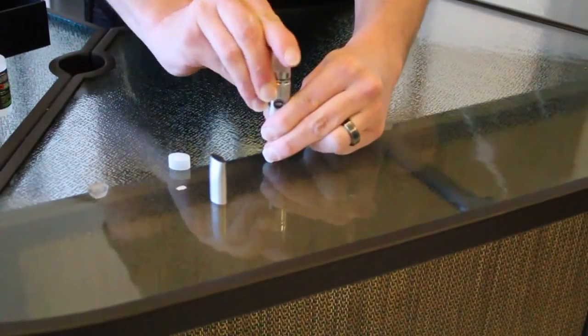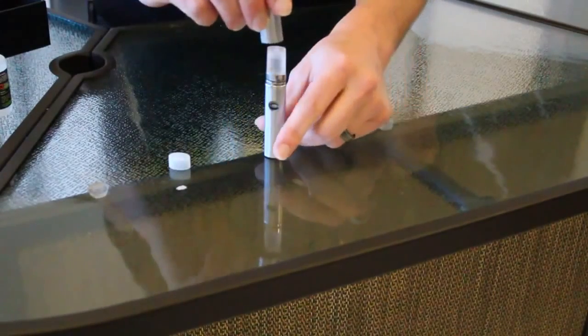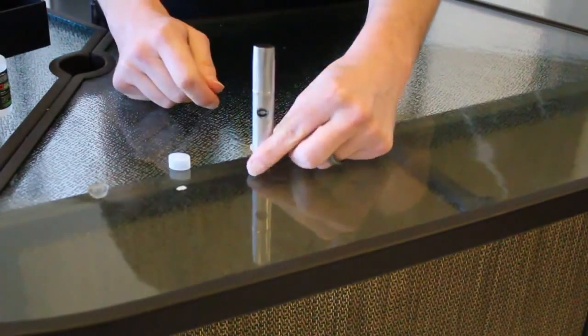The tank cartridge snaps into the atomizer lock. At this point, we can place the mouthpiece cap onto the unit, and it's ready to use.